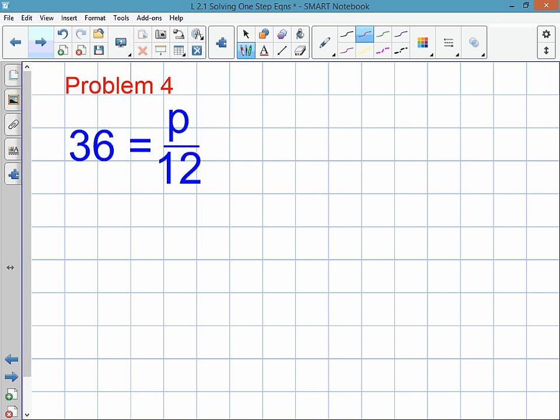In problem 4, the letter p is being divided by 12. The opposite of division is multiplication.